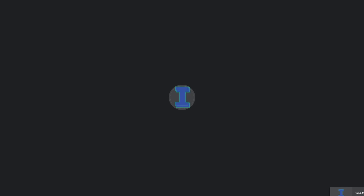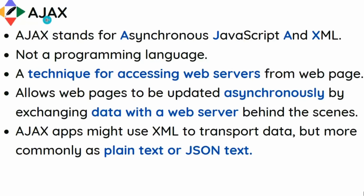AJAX stands for Asynchronous JavaScript and XML. The XML part is related to Extended Markup Language, which is a markup language with tags and values. You can also use another object notation called JSON, which is related to JavaScript. Most of the time, because we are dealing with JavaScript and related technologies, it would be AJAJ — Asynchronous JavaScript and JSON — rather than XML.